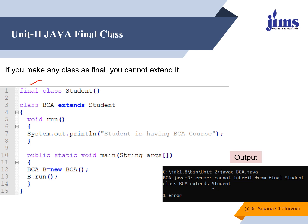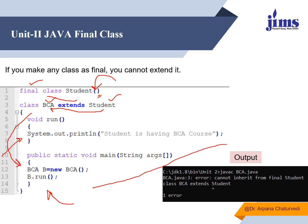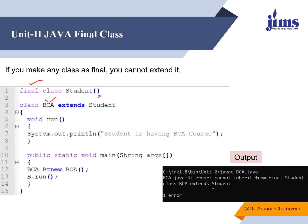If you make any class final, you cannot inherit it. For example, this is a class Student — I am deriving a class BCA from it, where BCA is the derived class and Student is the parent or base class. The moment I execute it, it says "you cannot inherit from final Student." You cannot inherit or generate a derived class from a parent if the parent class is final. So this is the importance of the final keyword in terms of variable, method, and class.